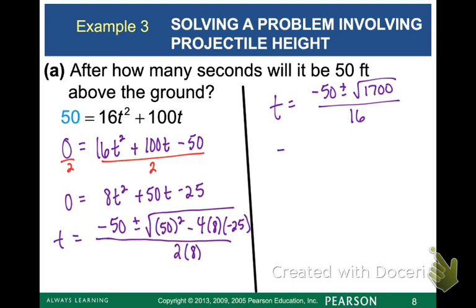So first of all, write this once with a plus sign and once with a minus sign because technically it's two answers. And then plug these into your calculator and we get t equals 0.55 or 5.70.